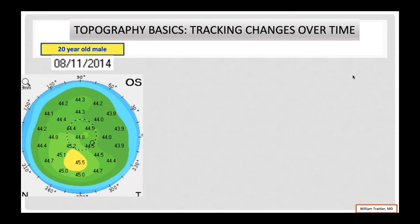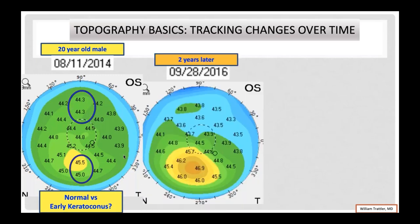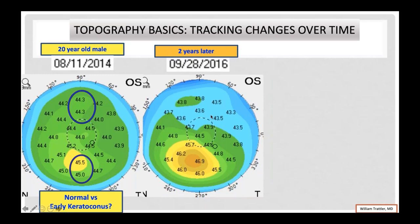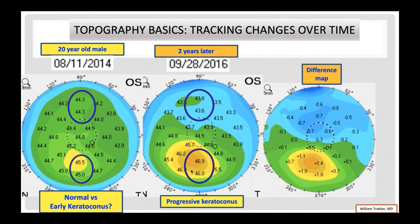Topography also lets us track changes over time. Here's a 20-year-old male who came in with a little inferior steepening in their left eye — the top part was green at 44.3 and the bottom part was 45.5. We suspected keratoconus and watched this patient. Two years later, you can see progression where the top part got flatter and the bottom part got steeper. In keratoconus, you don't just see the cone get steeper — you see a reshaping where one part gets flatter and another gets steeper. The difference map shows this clearly, and it's one of my favorite ways to evaluate patients over time.